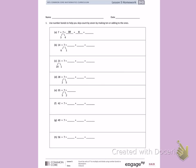Number 1. Use number bonds to help you skip count by 7 by making 10 or adding to the ones. Letter A: 7 plus 7. We put together 7 and 3 to make 10 with 4 left over. 10 plus 4 is 14.